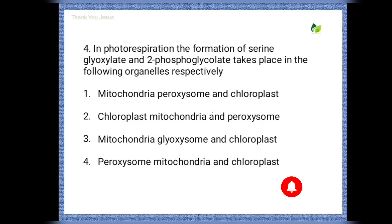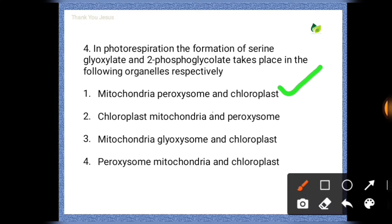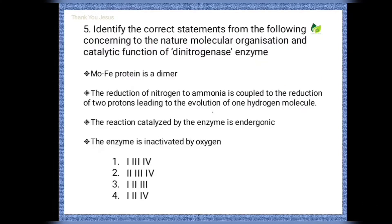Next question on photorespiration: The formation of serine, glyoxylate, and 2-phosphoglycerate/glycolate takes place in which organelles respectively? Options are: mitochondria, peroxisome and chloroplast; chloroplast, chloroplast, mitochondria and glyoxysome; mitochondria, glyoxysome and chloroplast; peroxisome, mitochondria and chloroplast. The correct option is the first one — mitochondria, peroxisome and chloroplast.